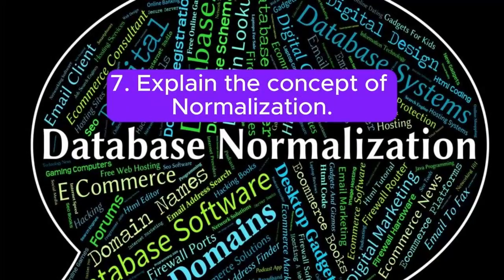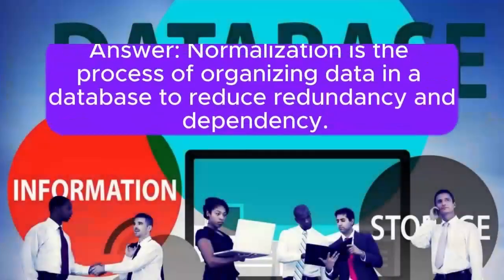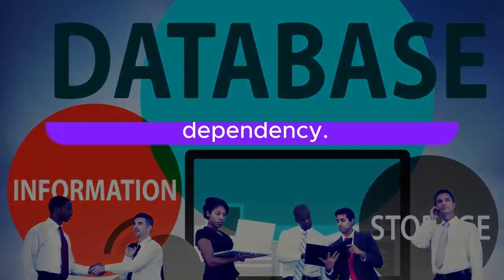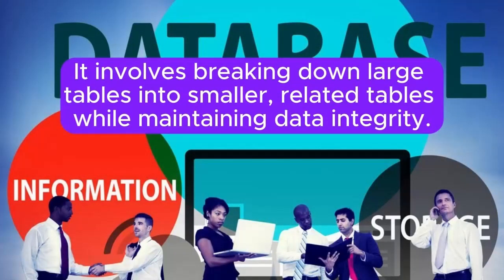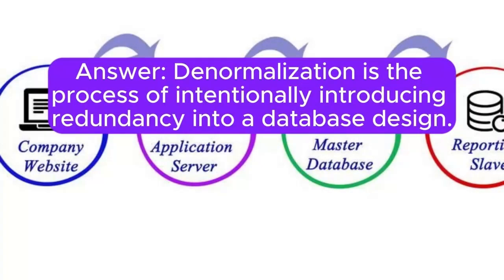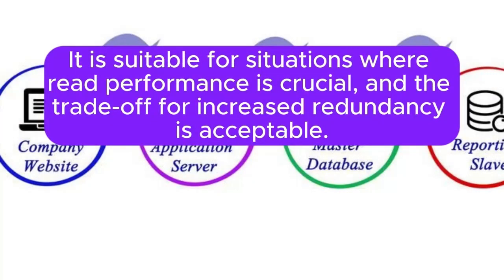7. Explain the concept of normalization. Answer: Normalization is the process of organizing data in a database to reduce redundancy and dependency. It involves breaking down large tables into smaller, related tables while maintaining data integrity. 8. What is denormalization, and when is it appropriate? Answer: Denormalization is the process of intentionally introducing redundancy into a database design. It is suitable for situations where read performance is crucial and the trade-off for increased redundancy is acceptable.